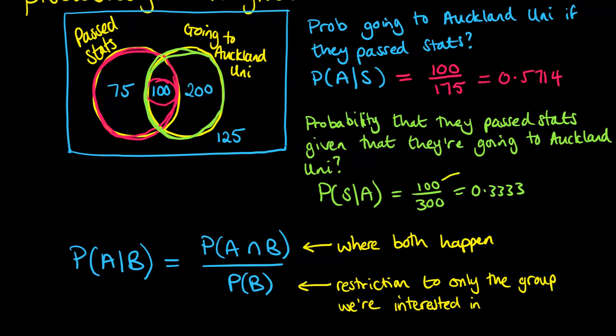The 100 was where both of them happen. And on the second one, the 300 was restricting it down to the condition of that probability, that group we wanted of only going to Auckland Uni. So in probability notation, it would have been 100 out of the 500 total year 13 students, divided by the 300 out of 500, which ends up being 100 over 300 and gives us what we had just there.